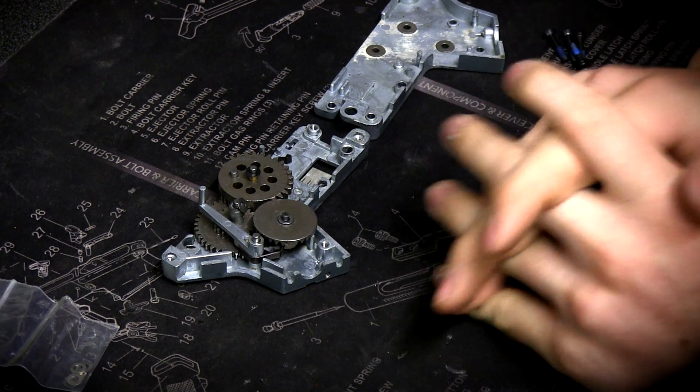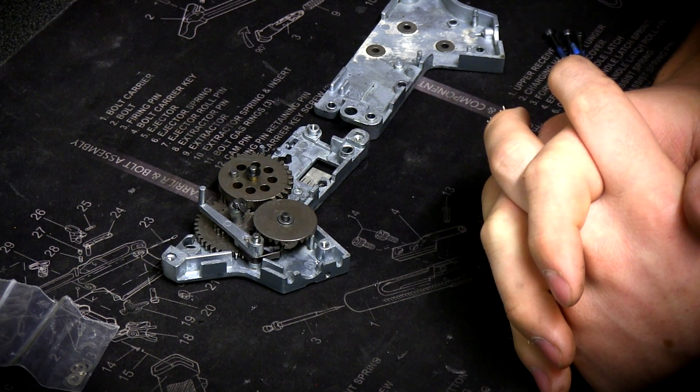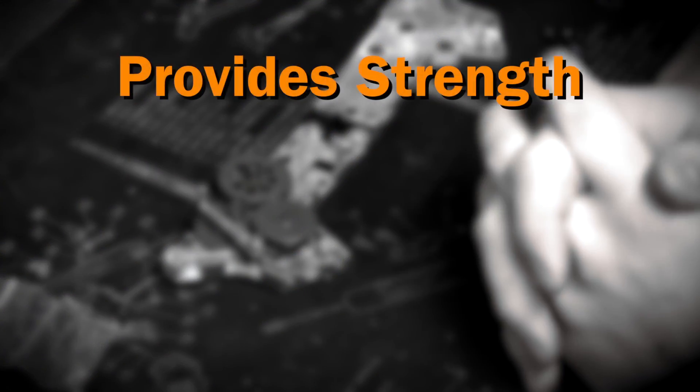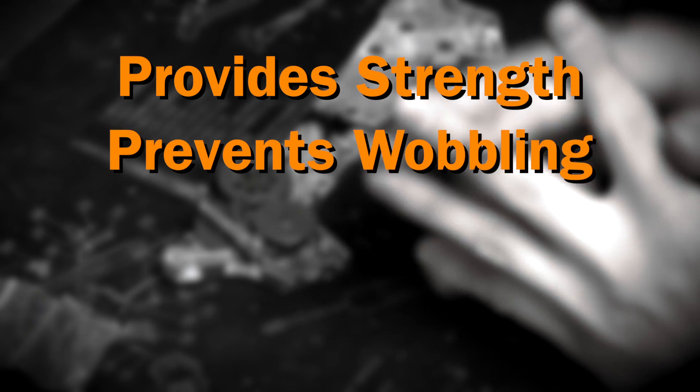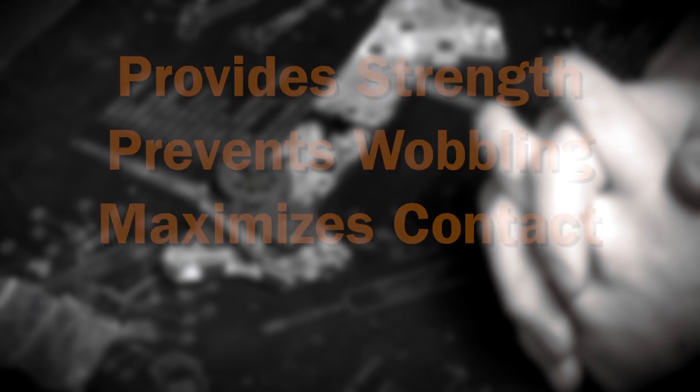Shimming is one of the most important aspects of tuning your AEG, simply because it provides the gears with the greatest strength possible, keeps them from wobbling around and keeps the surface contact of the teeth at its max.